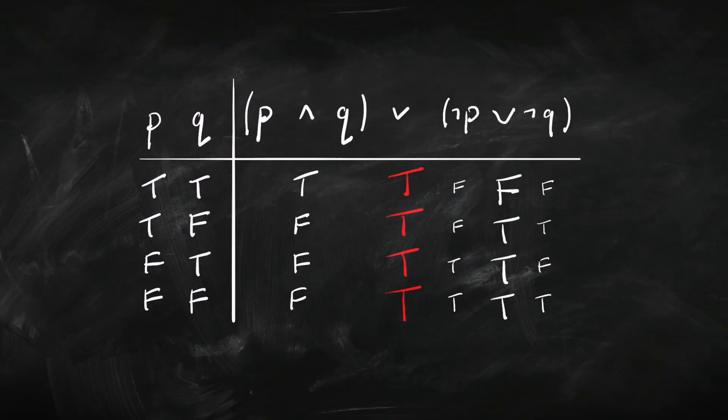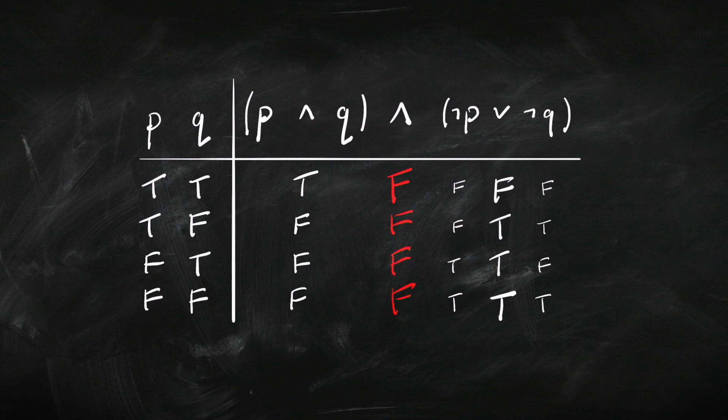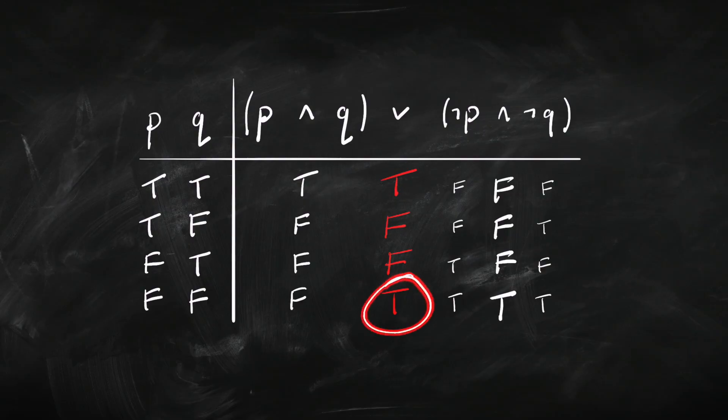So what we've seen are three ways of classifying a sentence using truth tables. It might be a tautology — that is, all T's. It might be a logical falsehood — that is, all F's. And it might be neither a tautology nor a logical falsehood: it might have some T's and some F's in its column. We're going to call that logically contingent. Such sentences are satisfiable — sometimes they're true, but they're not always true the way a tautology would be.